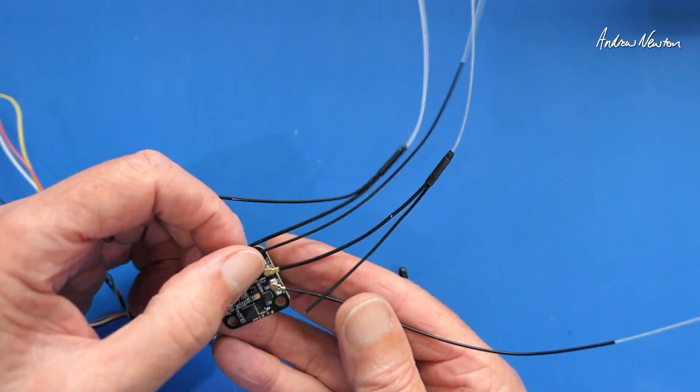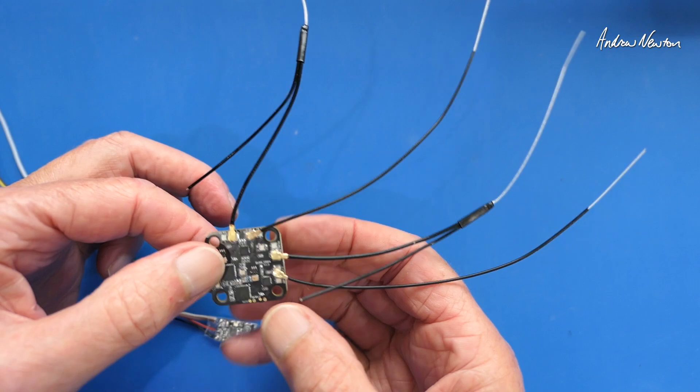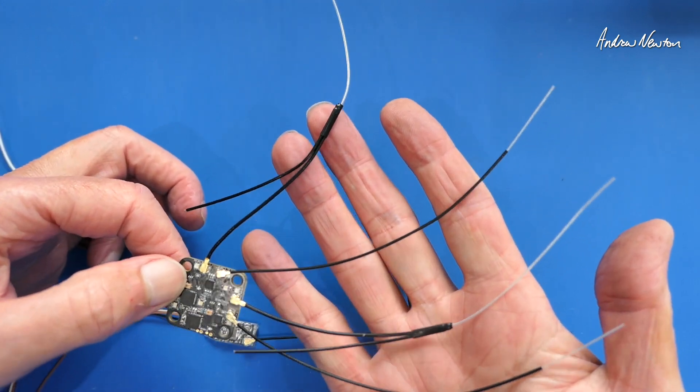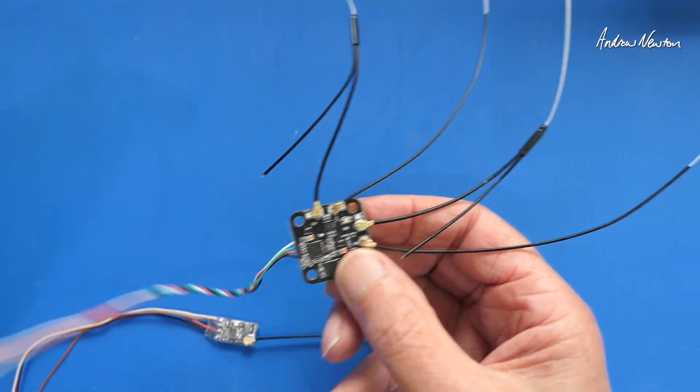And then there's the other extreme, which is the Radio Master Nomad, which is dual band. So that's 2.4 and 900 megahertz and four full antennas. Yeah, I haven't really worked out how to mount that on the plane just yet.